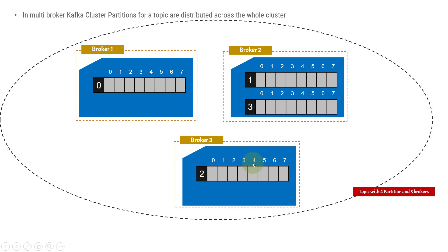Since partitions are distributed across the whole cluster, when you publish messages, the first message can go to broker one, the second to broker two, the third to broker three, and the fourth back to broker one. This is the scenario where you have a Kafka cluster with four partitions inside a single topic distributed across the cluster.